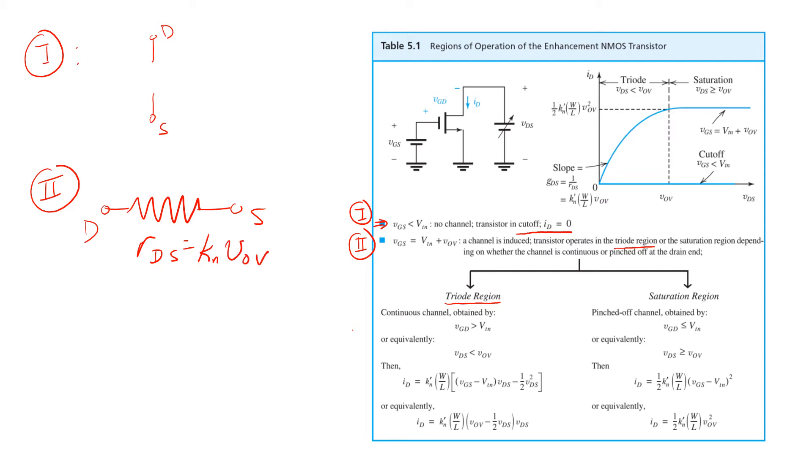Now, we found that this simple resistor model for triode region MOSFET starts becoming less accurate as the drain source voltage approaches the overdrive voltage. So keep that in mind.